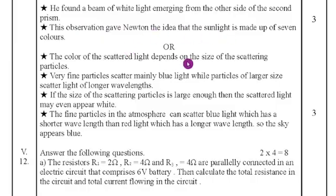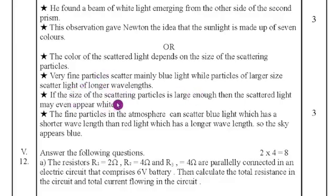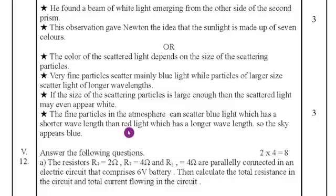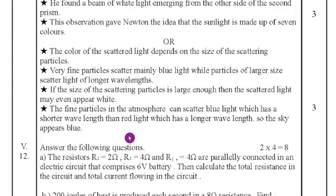The second option for question 11: the color of scattered light depends on the size of the scattering particle. Very fine particles scatter mainly blue light, while large particles scatter light of longer wavelengths. If particles are large enough, scattered light may appear white. The sky looks blue because fine particles in the atmosphere scatter blue light, which has a shorter wavelength, more than red light, which has a longer wavelength.